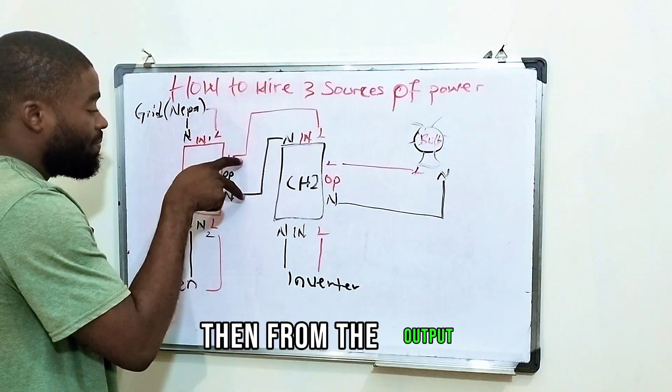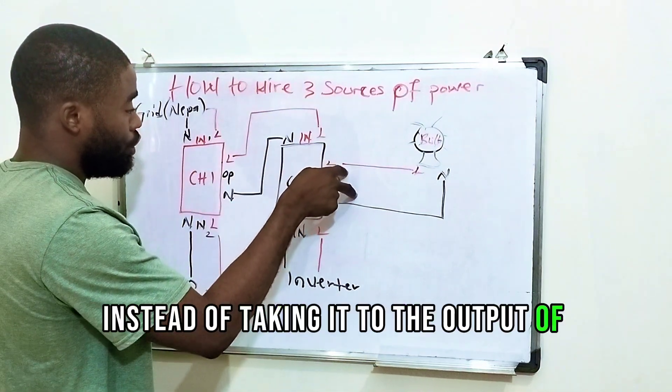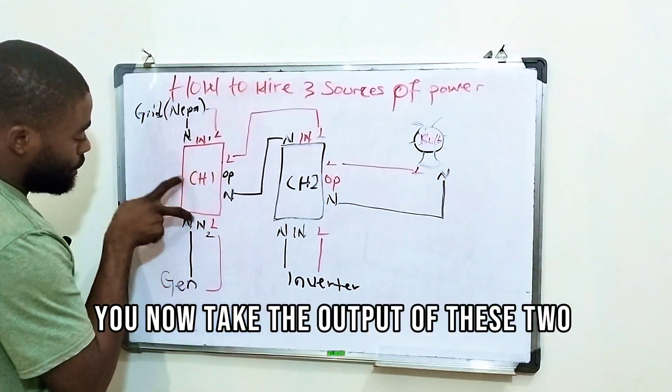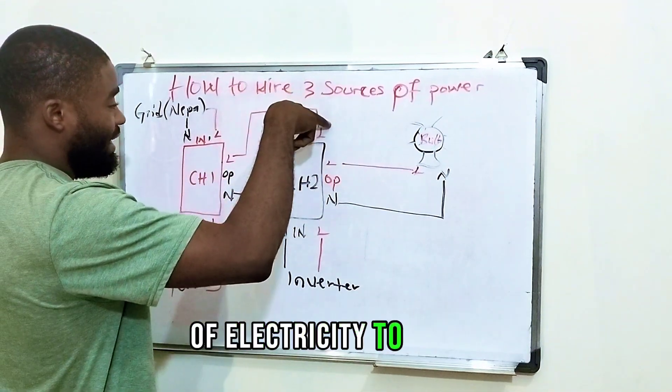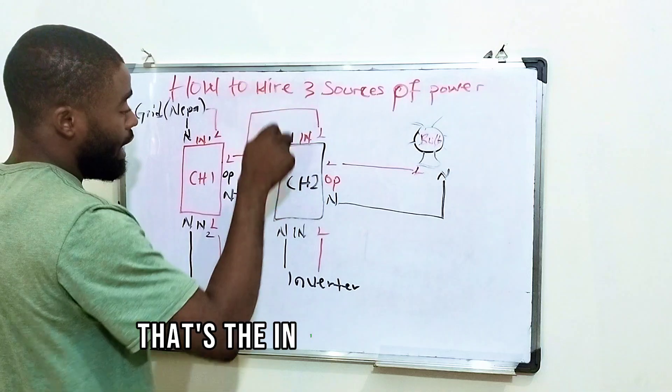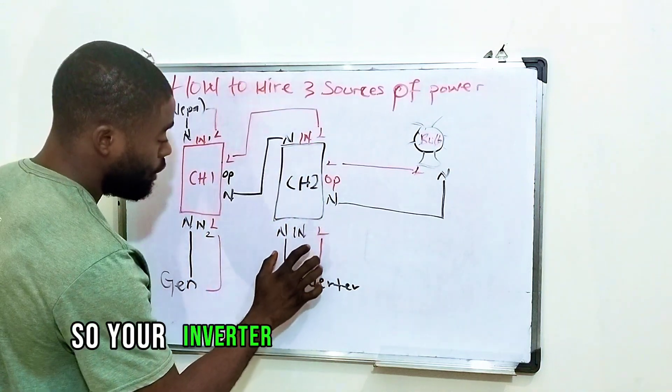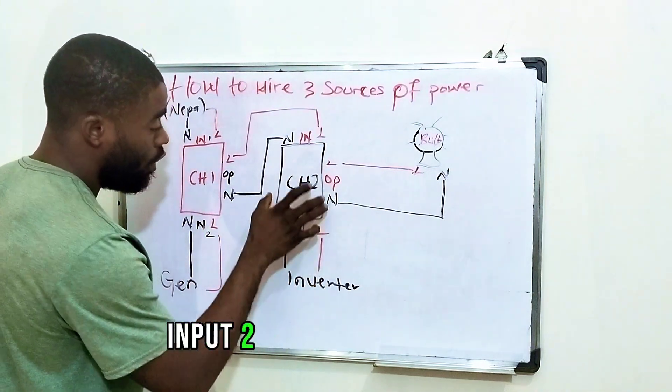Then from the output, instead of taking it to the output of changeover two, you now take the output of these two sources of electricity to the input one of changeover two. So your inverter will be connected to the input two of changeover two.